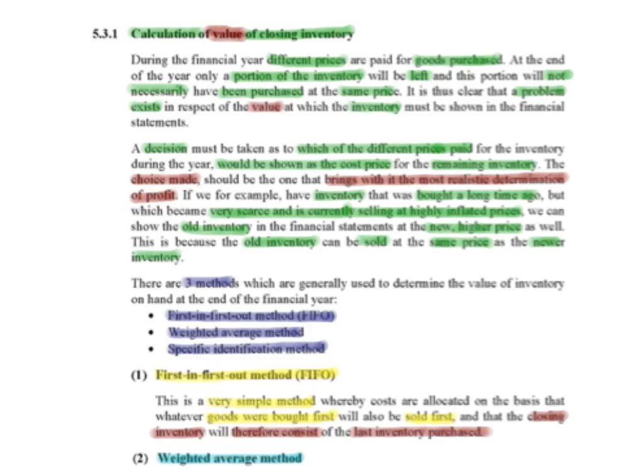Therefore, whatever I value my closing inventory as has an effect on profit. So if I calculate this remaining inventory value, it must be done so that I can have the most realistic determination of my profits. For example, if we have inventory that was bought a long time ago but which became very scarce and is currently selling at a very highly inflated price, we can show the old inventory in the financial statement at the new or higher price as well, because this old inventory can now be sold at the same price as the newer inventory.